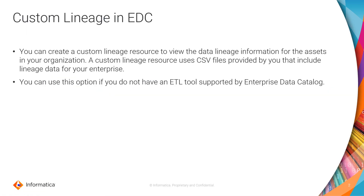You can create a custom lineage resource to view the data lineage information for the assets in your organization. A custom lineage resource uses CSV files provided by you that include lineage data for your enterprise. You can use this option if you do not have an ETL tool supported by Enterprise Data Catalog.